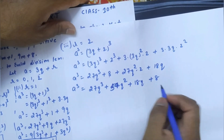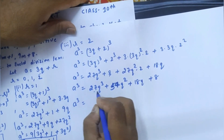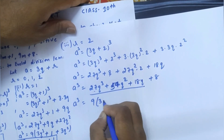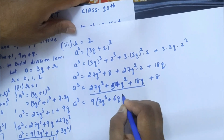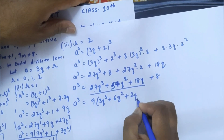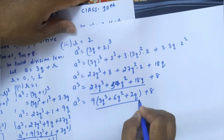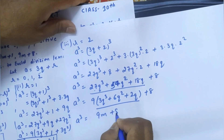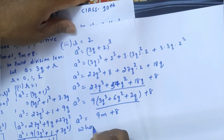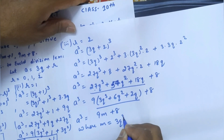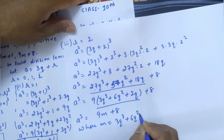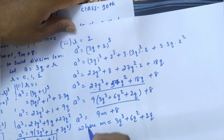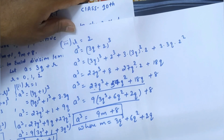Rearranging: a³ = 27q³ + 54q² + 18q + 8. Taking 9 common from all terms except 8: a³ = 9(3q³ + 6q² + 2q) + 8. Therefore, a³ = 9m + 8, where m = 3q³ + 6q² + 2q.